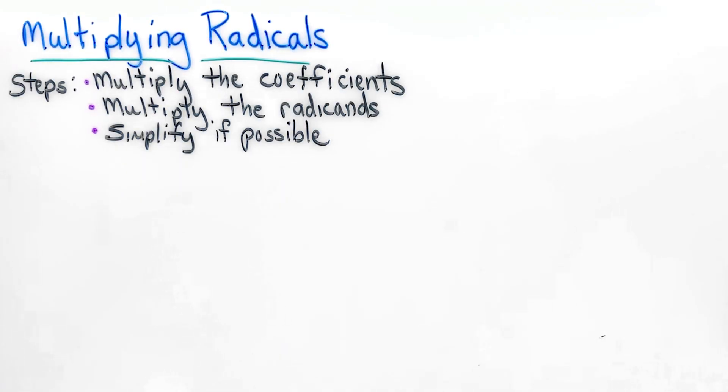This lesson is about multiplying radicals. The steps that we're going to do today is we're going to multiply the coefficients, we'll multiply the radicands, and then we will simplify.